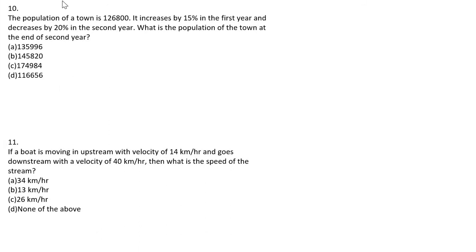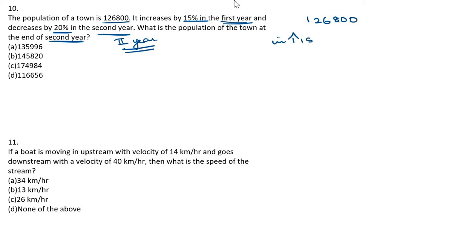What is given? The population of a town is 126,800. It increases 15% in the first year and then decreases 20% in the second year. What is the population at the end of the second year? First year: 15% of 126,800. Cancelling the zeros and multiplying gives an increase of 19,020. Adding to the original: 126,800 + 19,020 = 145,820.